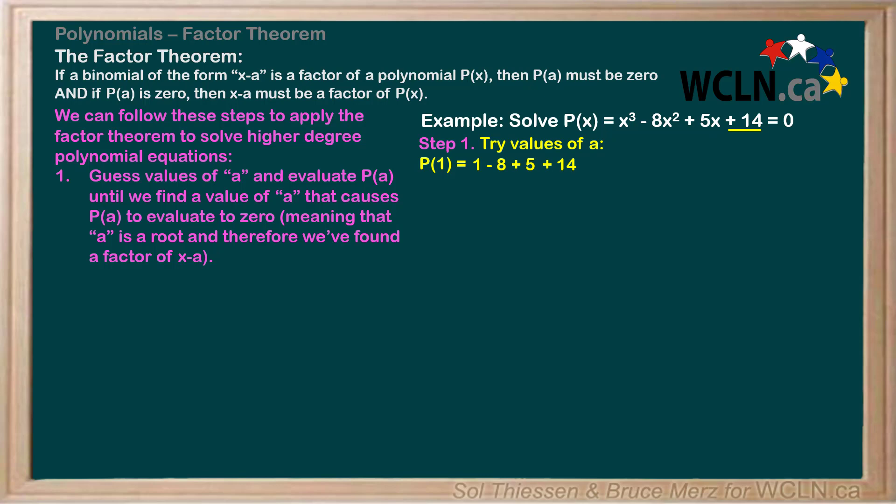1 minus 8 plus 5 plus 14 is 12. Therefore, 1 is not a root of the polynomial and x minus 1 is not a factor. Let's now see if negative 1 is a root of our polynomial by substituting negative 1 in for all the x's. Negative 1 cubed is negative 1.